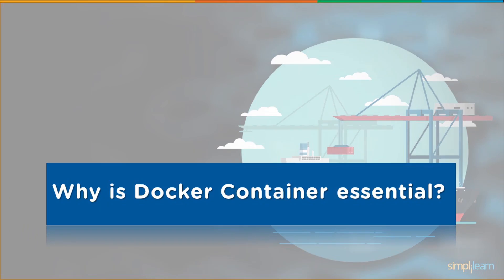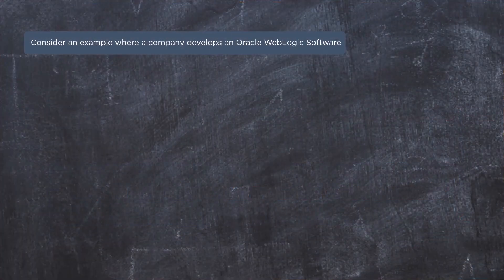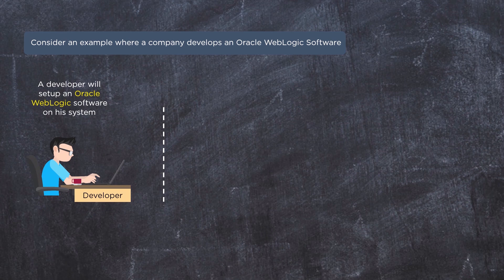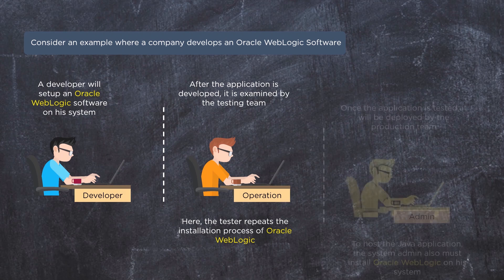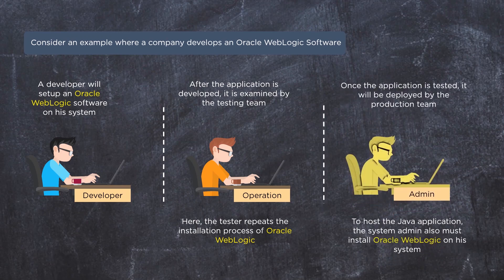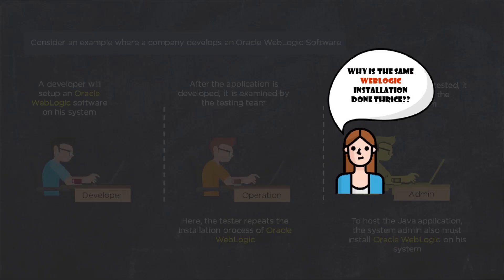Consider an example where a company develops code on Oracle WebLogic software. A developer installs Oracle WebLogic on his system, develops the application, and shares it with the testing team. The tester repeats the WebLogic installation process on his system. Later, the same application is shared with the production team, and the system admin must also install Oracle WebLogic on his system.